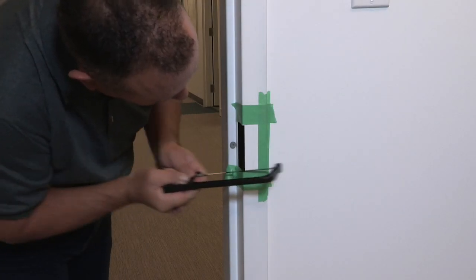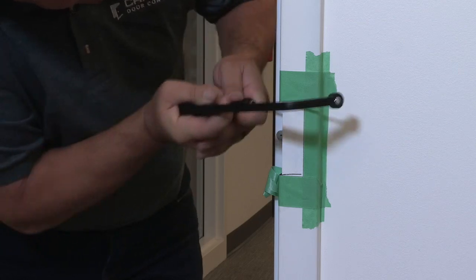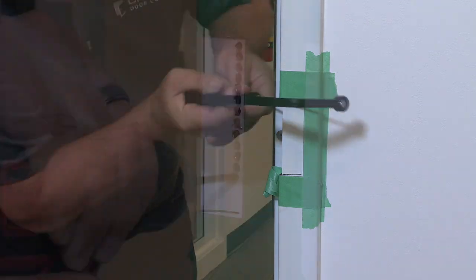We start by using the metal hacksaw to cut the horizontal lines. It doesn't matter if they're not precise, the cut just needs to be inside the tape.